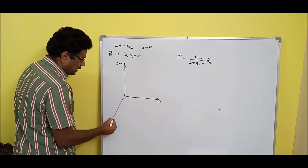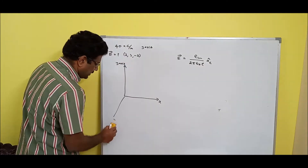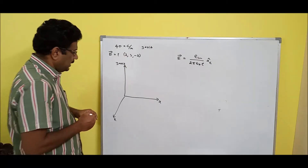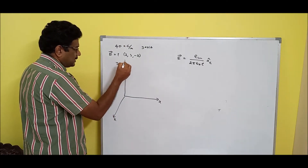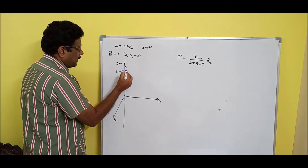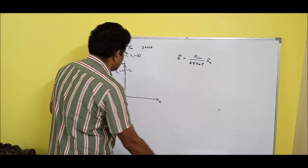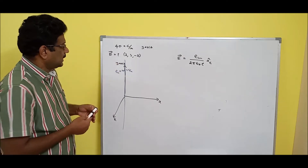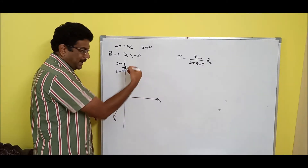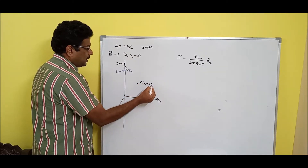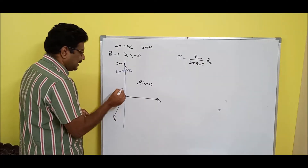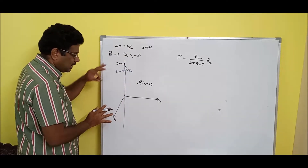So the infinite line charge is along the Y-axis, which means there is a line charge density going along the Y-axis whose rho_L equals 40 nanocoulombs per meter. Find electric field intensity at x=2, y=3, z=-2. What is the procedure to calculate this? Before starting the derivation, you should know how to find A_rho_cap.